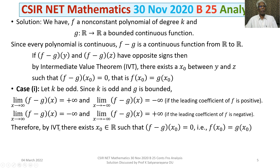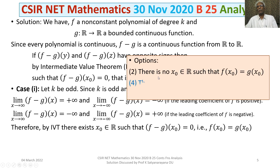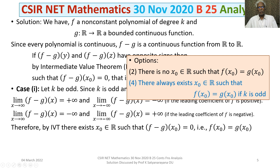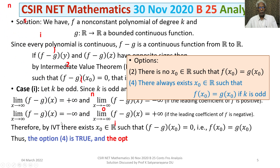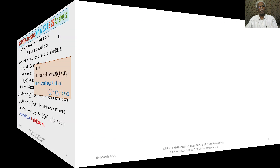By the Intermediate Value Theorem, there exists an element X₀ belonging to R such that F minus G of X₀ equals 0, that is F(X₀) equals G(X₀). So in this case such an element always exists. Looking at the options: Option 2 says there is no X₀ such that F(X₀) equals G(X₀) — this is not true. Option 4 is true and Option 2 is not true. Let's move to the next case.